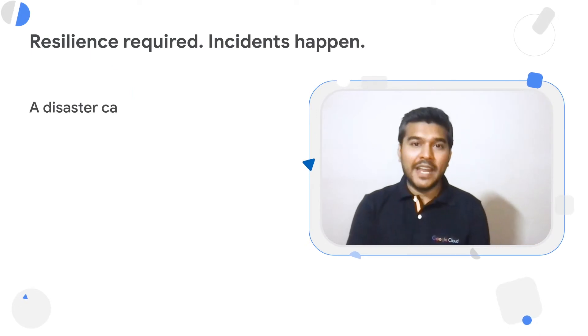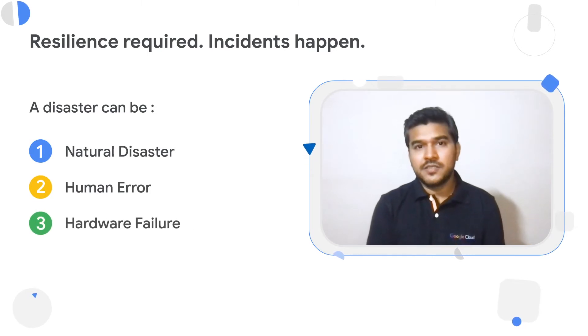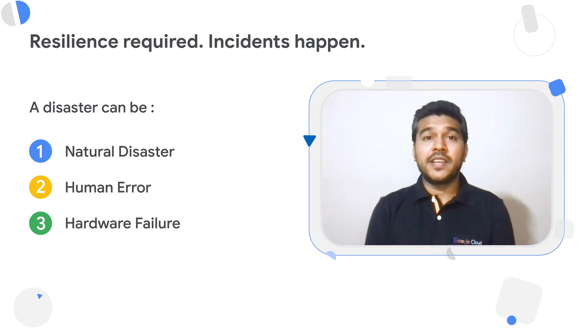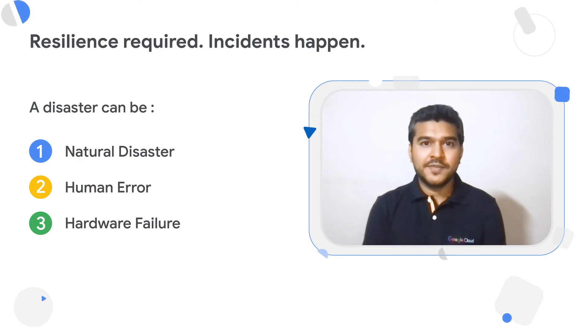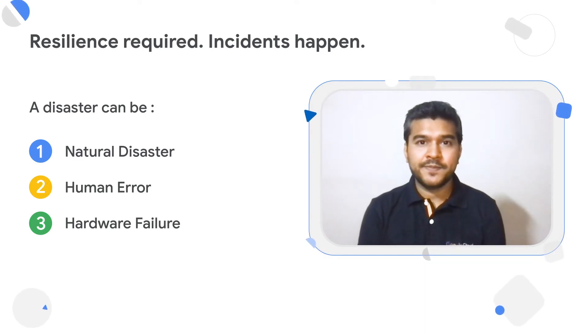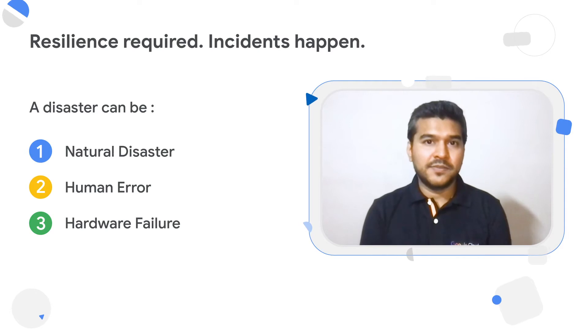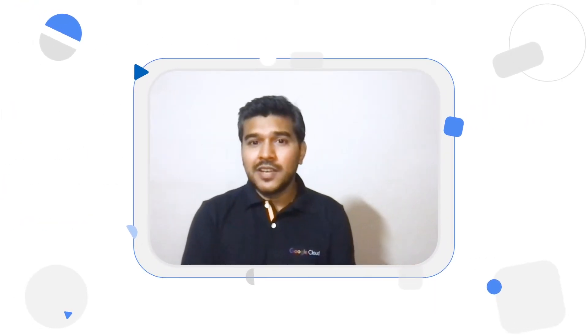A disaster, in simplest terms, can be defined as a service-interrupting event. These service-interrupting events, also referred to as disasters, can be natural disasters, human errors, or even hardware failures. Natural disasters can be like hurricanes, floods, or earthquakes. Human errors could be like a bad configuration push or a bad deployment. Hardware failure can be any issues with the underneath infrastructure.